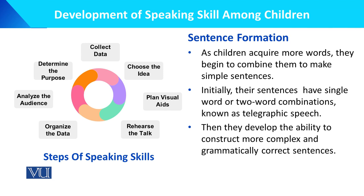After the one-word stage comes the two-word stage, which we call the telegraphic stage. As children acquire more words, they begin to combine them to make simple sentences — initially one or two words. They then develop the ability to construct more complex and grammatically correct sentences as they move to the three-word stage and beyond.